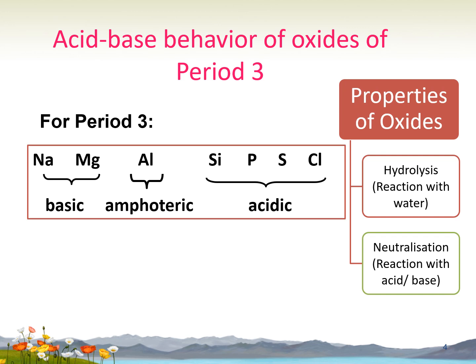Argon also does not react with water except it dissolves slightly to the extent of about 33.6 cm³ per kilogram at 20 degrees Celsius or 293.15 Kelvin. The properties of the oxides can be explained by using the hydrolysis reaction equation, which is the reaction of the oxides with water, and the neutralization reaction equation depending on the type of oxides.